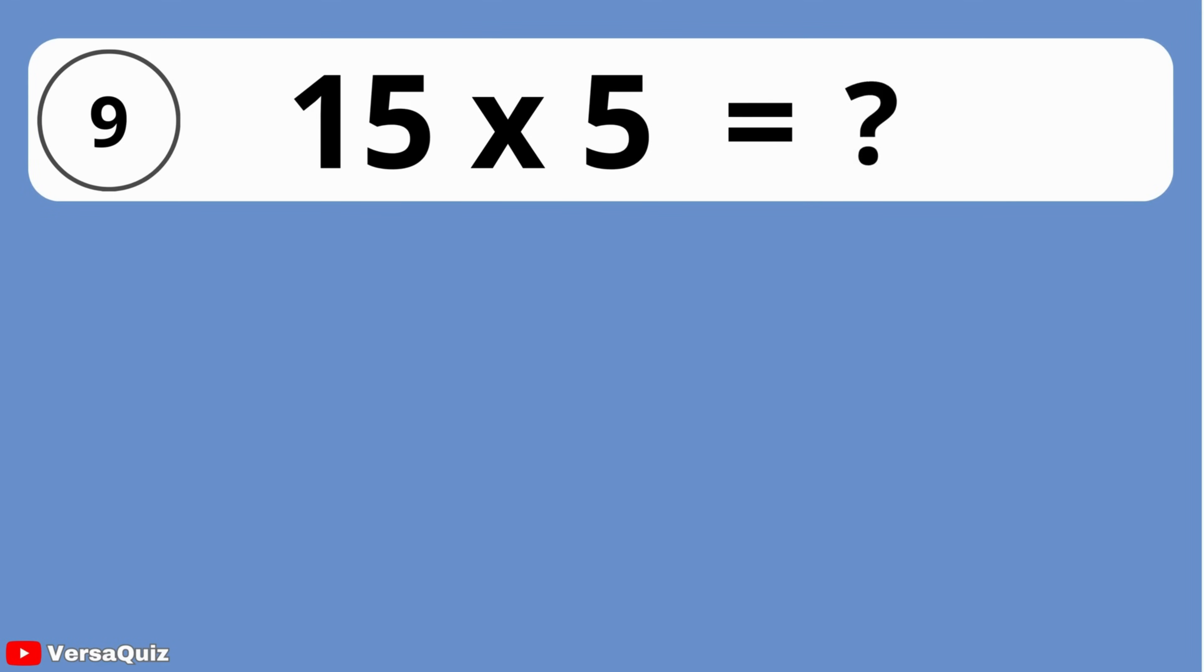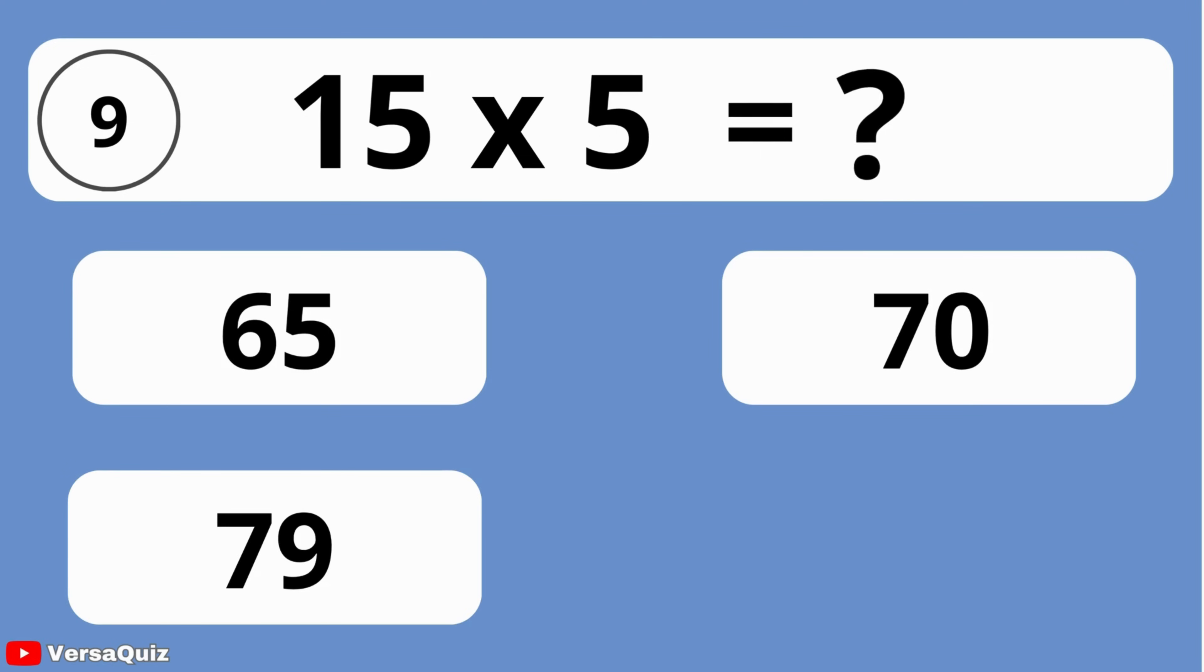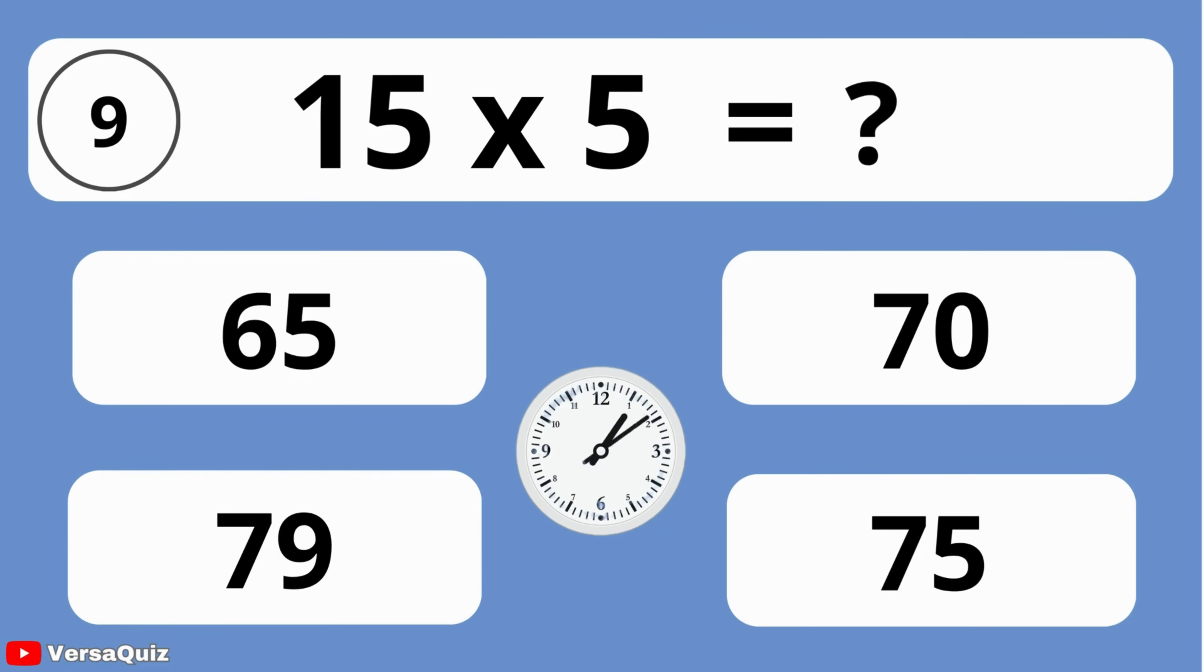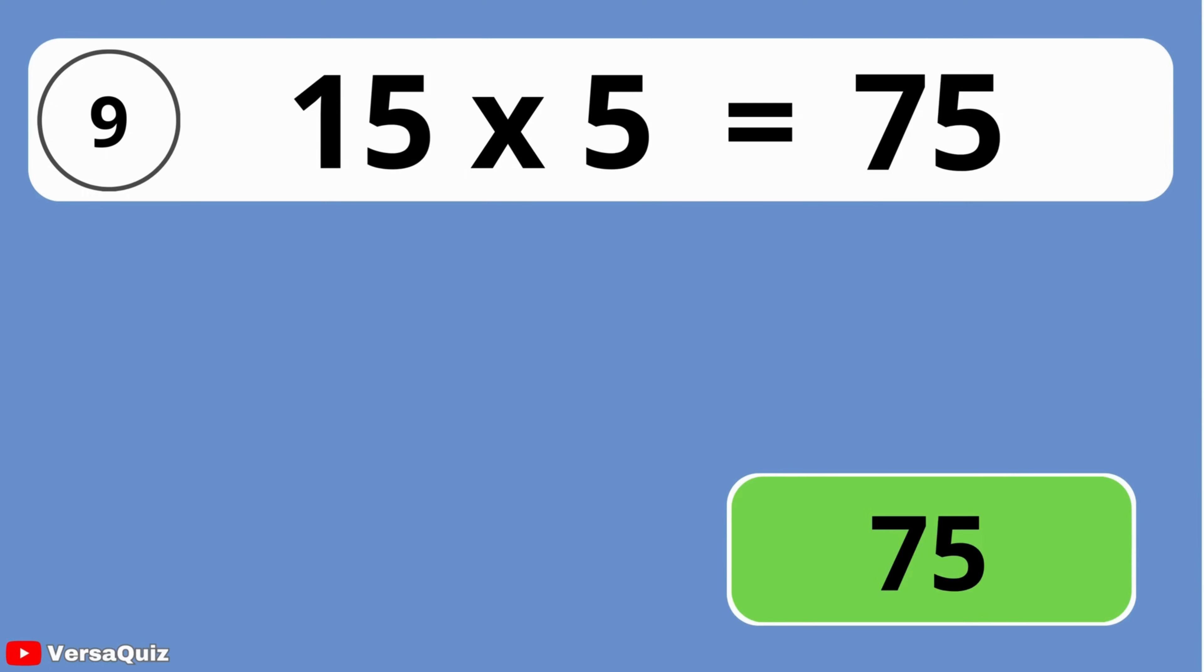What is the product of 15 and 5? 55, 65, 70, 79, or 75? The answer is 75. When you multiply 15 by 5, you get 75.